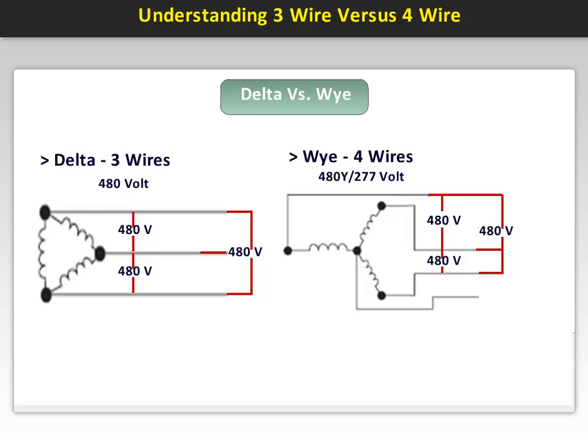A voltage of 277 volts is achieved by connecting any phase-to-neutral. Phase A to neutral, phase B to neutral, or phase C to neutral becomes 277 volts single-phase. This voltage is very popular for industrial lighting in factories.